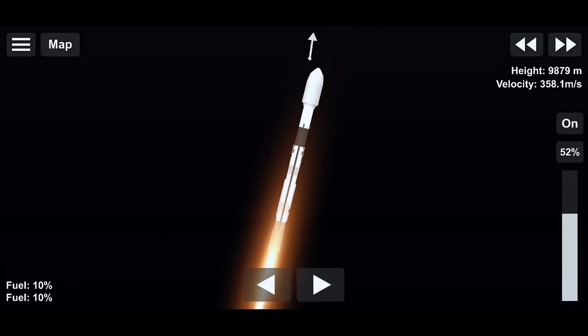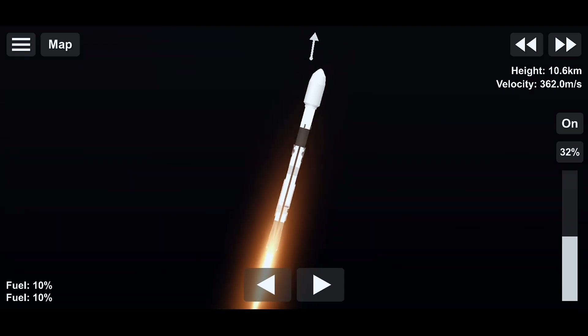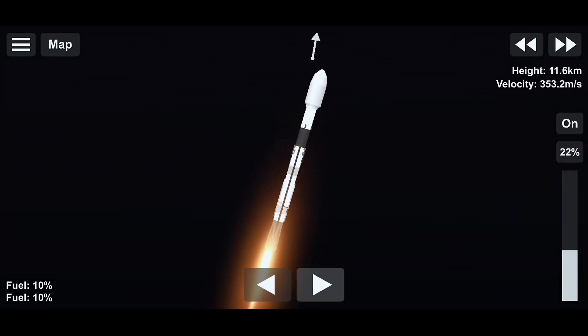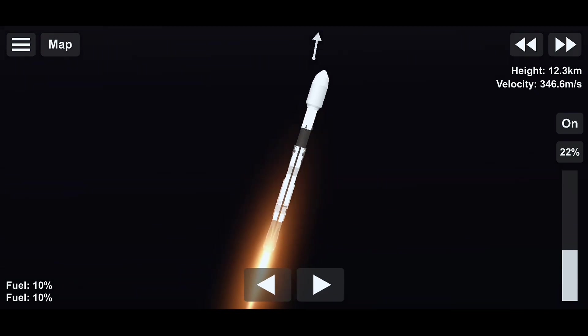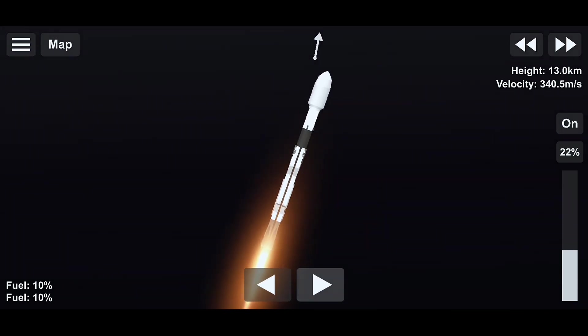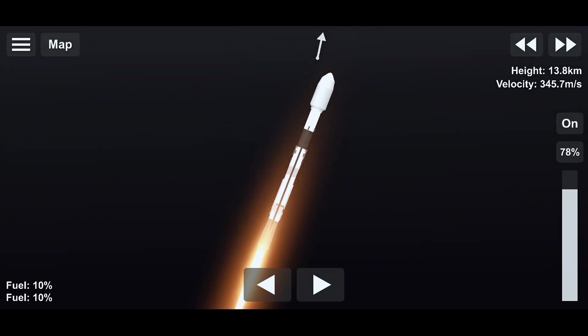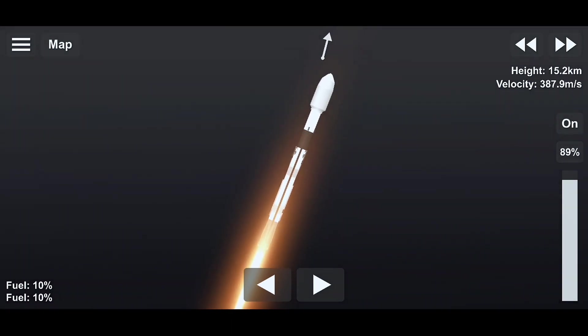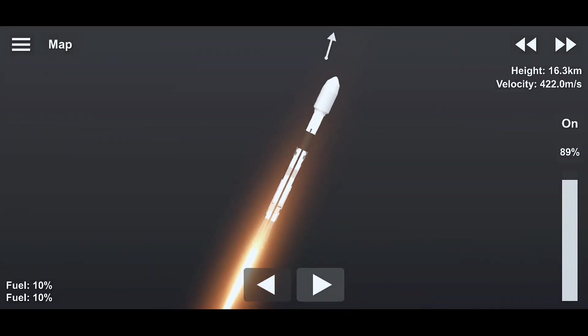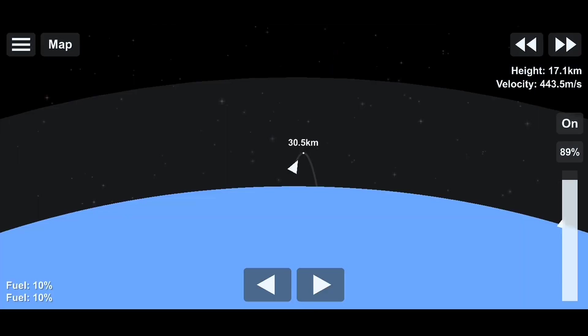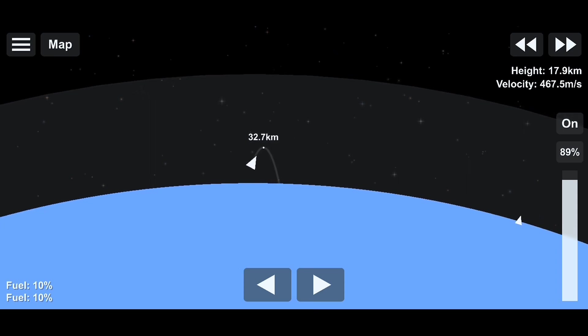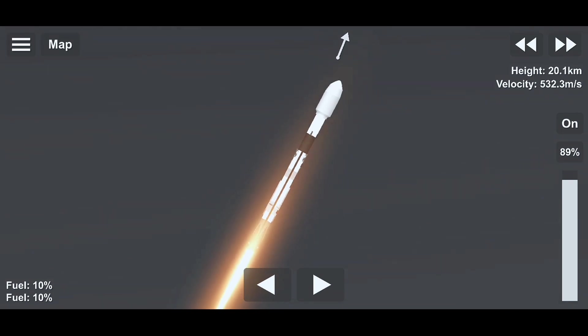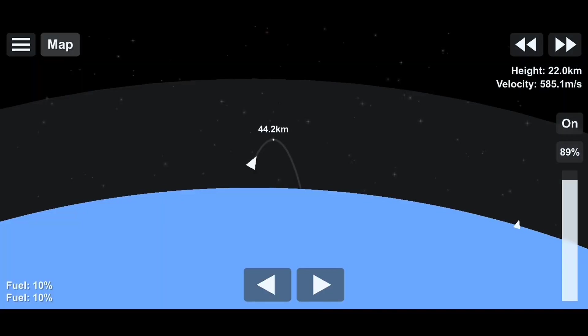We're throttling down right now on the Merlin 1D engines, preparing for supersonic and max Q. Mach 1. We've got the call out for Mach 1. We have throttled the Merlins back up to full power. Next event will be maximum dynamic pressure. And there we are. We're going through the thickest portion of the atmosphere at the highest speeds now as we continue to accelerate Falcon 9. The air density gets thinner and the loads on the vehicle decrease.